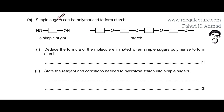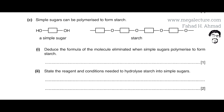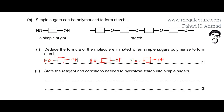Simple sugars can be polymerized to form starch — glucose molecules add up and get connected through a condensation reaction. The question asks us to give the formula of the molecule eliminated when simple sugars are polymerized to form starch. In the condensation reaction, many monomers of simple sugars are lined up and react together.